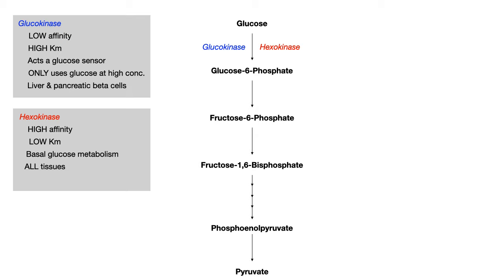Hexokinase operates basal glucose metabolism throughout all tissues, maintaining adequate glucose levels. But if hexokinase becomes overwhelmed by a massive influx of glucose, that is when glucokinase jumps in — it's only found in the liver and pancreatic beta cells, where it does a specific regulatory job, acting only when blood glucose levels are super high. The takeaway: both enzymes catalyze glucose to glucose-6-phosphate, but hexokinase is present all the time maintaining basal levels, while glucokinase jumps in during emergencies. These differences are extremely high-yield and will likely show up on your test.